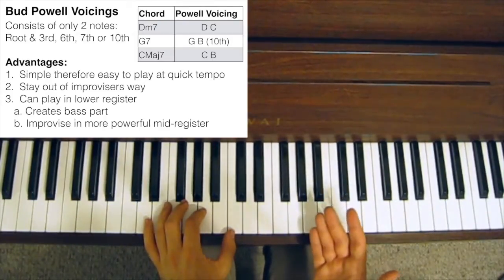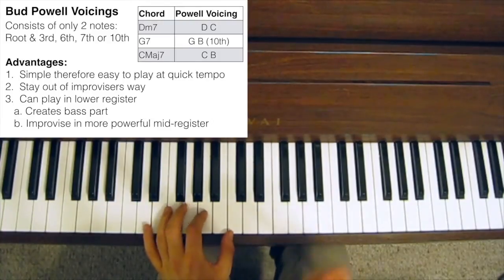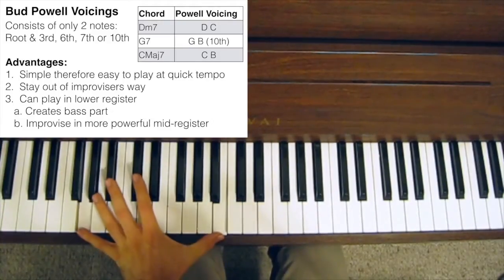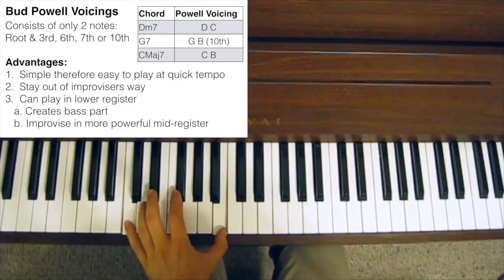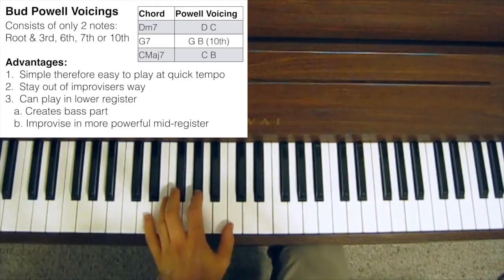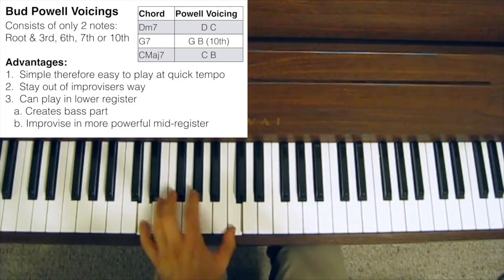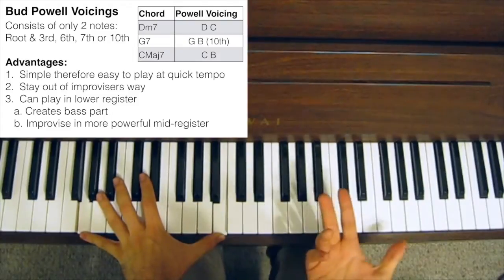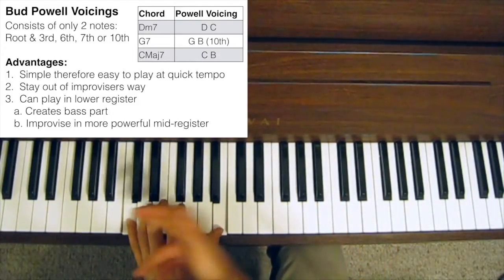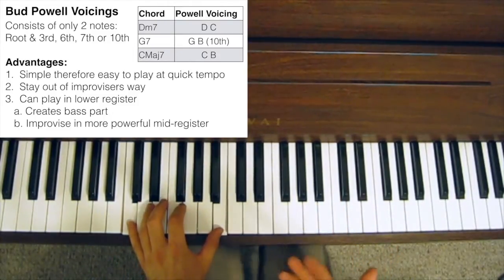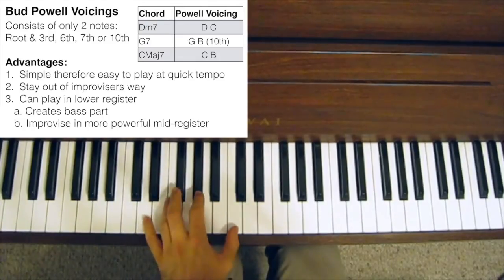If you were just to play a 2-5-1 in the key of C major, you can just play something like... That's just the root and the 7th on the D minor 7, the root and the 10th on the G7, and then the root and the 7th on the C major 7. Now that's quite easy to play.